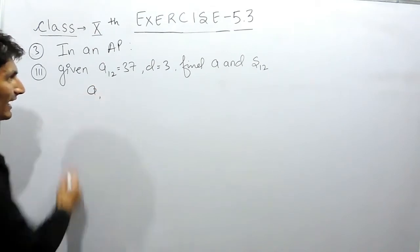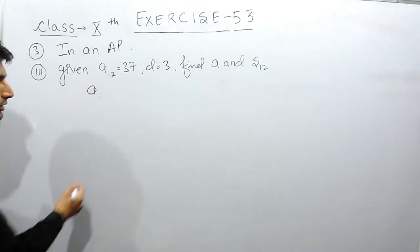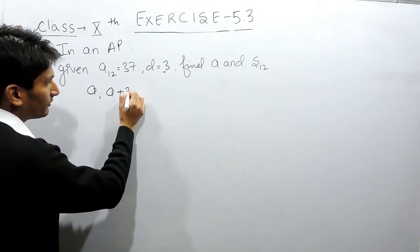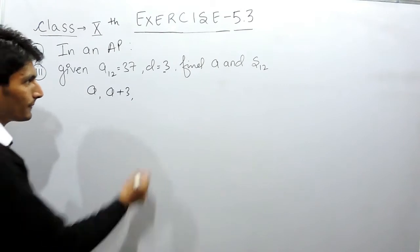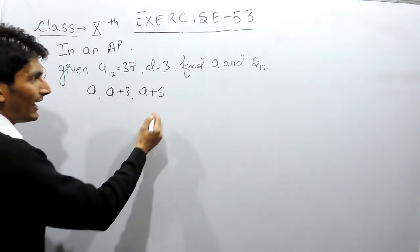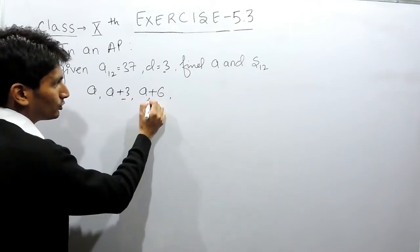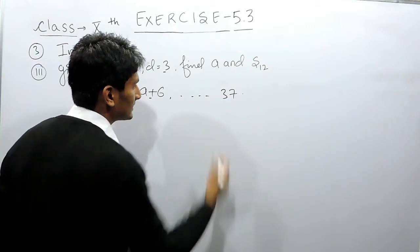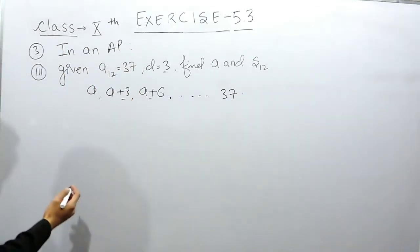So in this case, if I consider A as a first term, the common difference is 3 means the constant which you are adding to this is 3, and after that this will become 6 because another 3 you will add to this second term to make this third term, and the 12th term is equal to 37. So this is our standard AP.